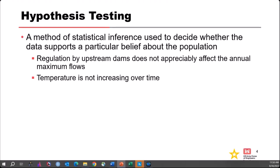So the formal definition of hypothesis testing: it's a method to make a statistical inference that helps us decide whether the data we've observed supports a particular belief about the population. That belief we usually refer to as a hypothesis, which is how hypothesis testing gets its name. Two simple examples: we might be trying to decide whether upstream dam regulation has an appreciable effect on annual maximum flows at a downstream location, or as a non-stationarity question, whether temperature has been increasing over time.